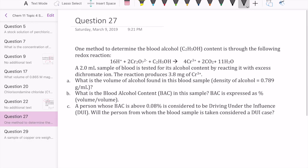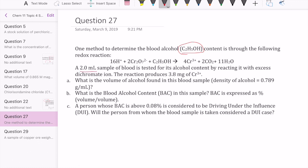Hi, let's take a look at question 27 in topic set 4. We are given a reaction that's already balanced and we're told that this is a reaction that's used to determine blood alcohol content. Alcohol is this formula right here, C2H5OH. This is a reaction that we would run if we have a sample of blood and we're trying to figure out how much alcohol that blood contains.